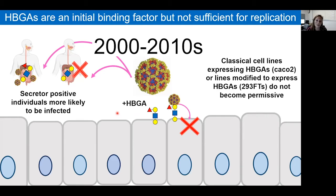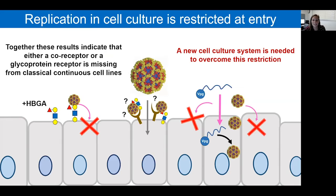Together, these things indicate that what's missing during entry would either be a co-receptor or a glycoprotein receptor not present on these continuous cell lines. So what we needed was a new cell culture system that would overcome this restriction.